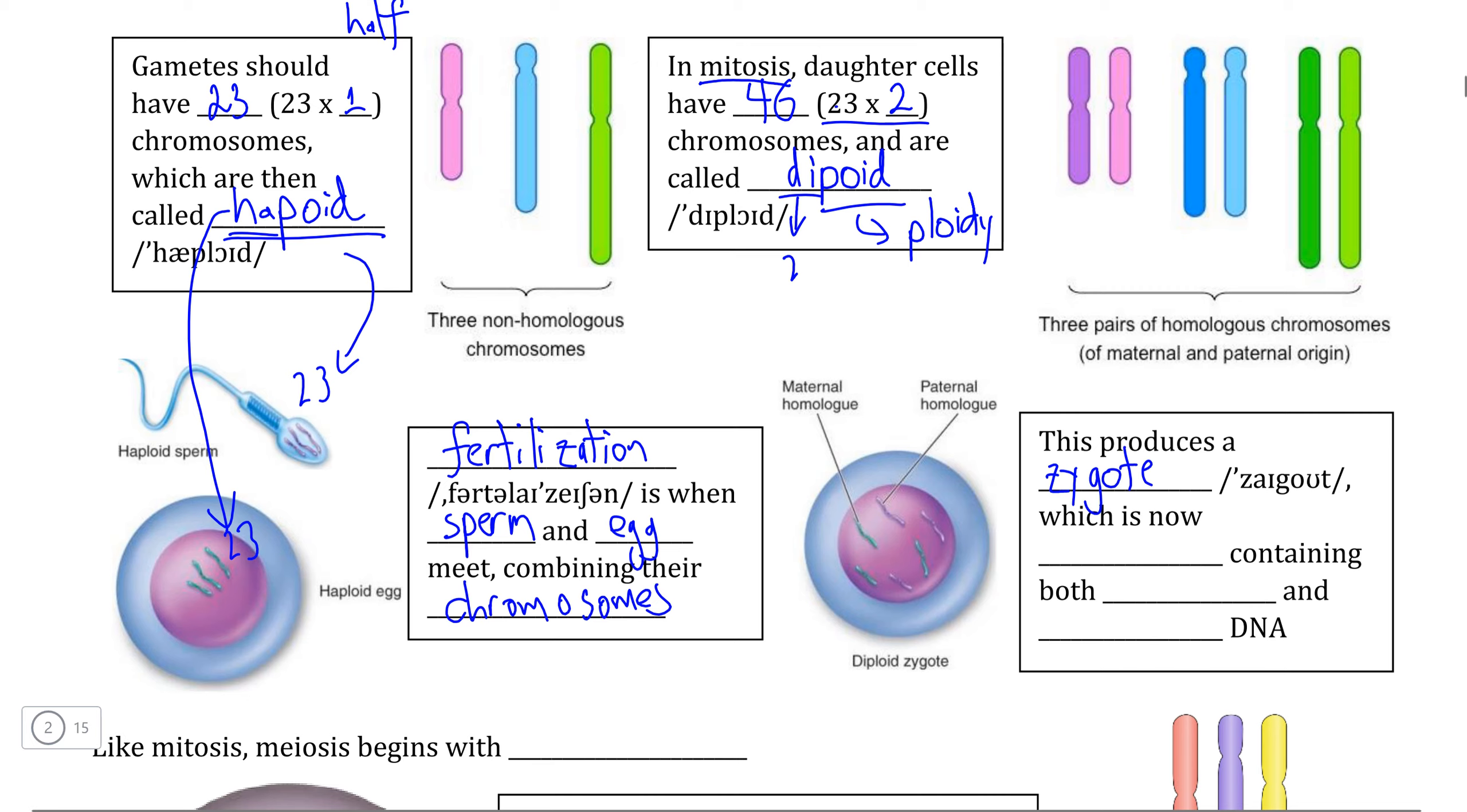Because of the fact that zygotes have both maternal and paternal sets of DNA from the mother and father respectively, zygotes are now diploid rather than haploid, because instead of a single set of 23 chromosomes, now they would have two sets.